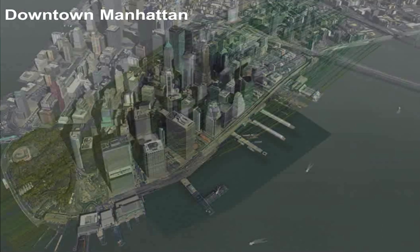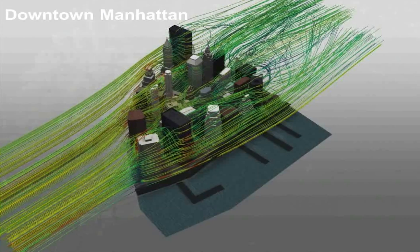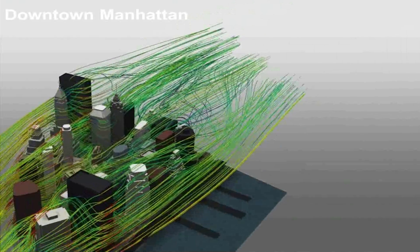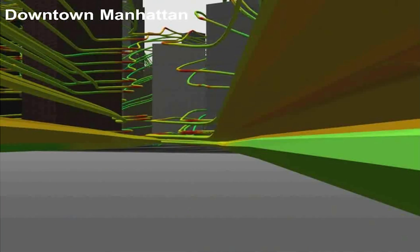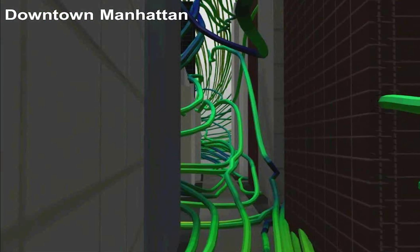So here's a case study of downtown Manhattan. What was done was a 3D model of Battery Park was imported into CFD and we have some tracers that were set up to show velocity vectors about the buildings downtown.